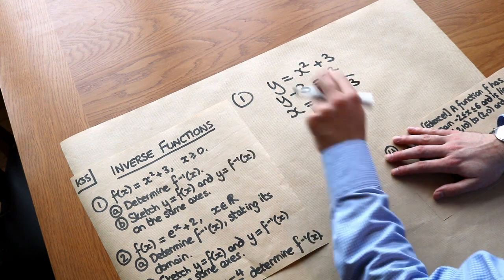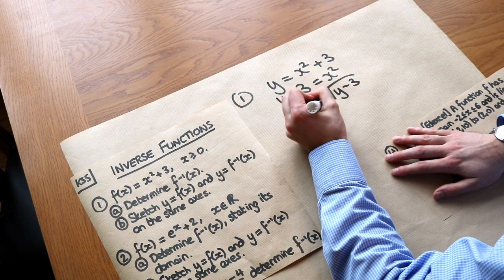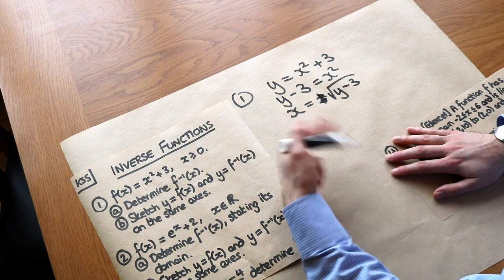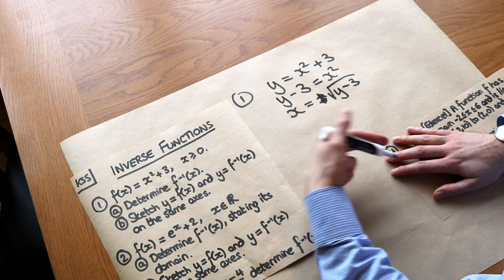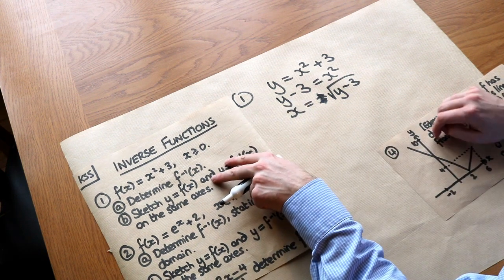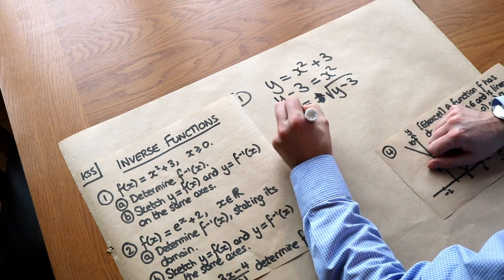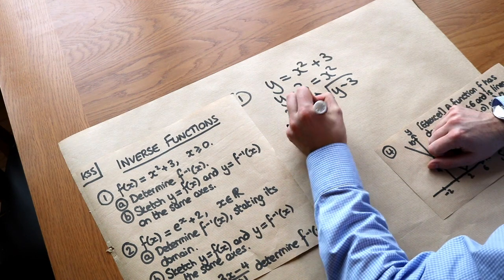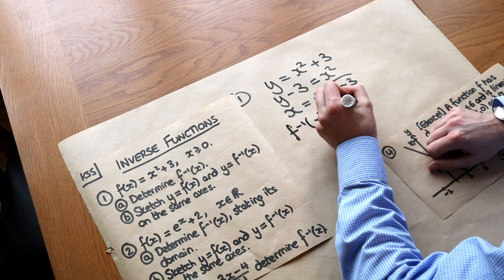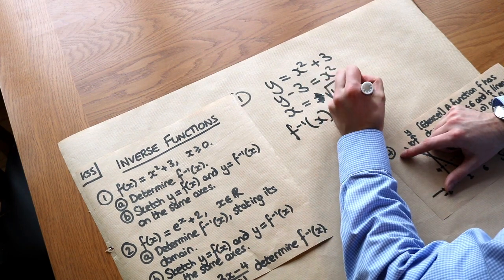The reason I'm not going to write that plus or minus — and I'll cross it out — is that otherwise it wouldn't be a function, and we'll see that when we look into domain and range of what is and isn't a function. So we do the usual thing and write f⁻¹(x) = √(x − 3), replacing the y back with x.